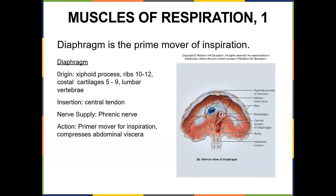If you look at the diaphragm itself, again it's the prime mover for inspiration. If you look at this diagram of the diaphragm, you'll see that the esophagus, the inferior vena cava, and the aorta actually go through it. So if you have issues with breathing and breathing mechanics, it can influence the GI system and the cardiovascular system. It's a big dome sheet of muscle. It originates from the xiphoid process, ribs 10 through 12, costal cartilages of 5 through 9, and the lumbar vertebrae. So if you have issues with breathing, you can affect your low back. It inserts on the white tendinous central tendon, and the nerve supply is the phrenic nerve.